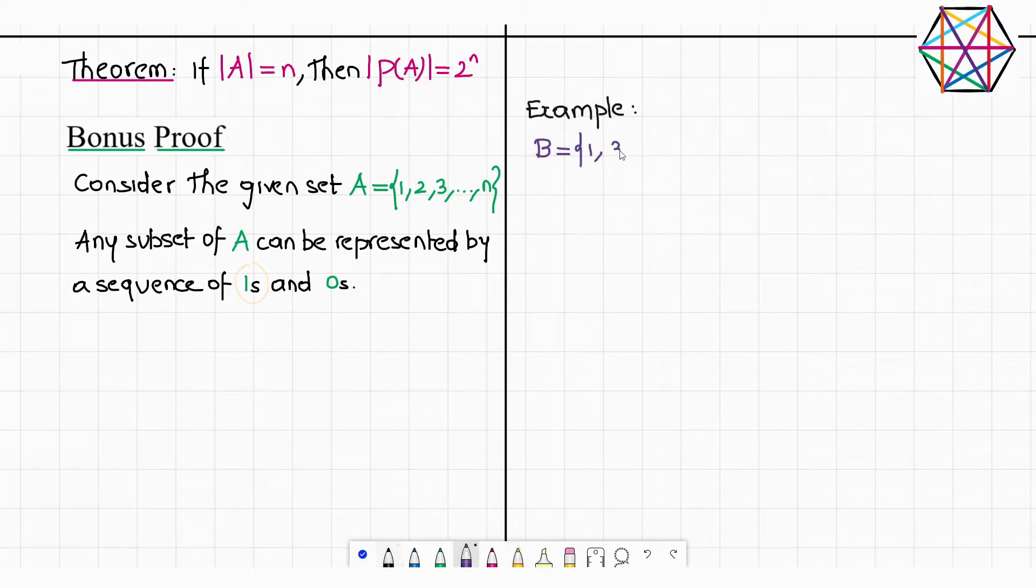For example, set B which is given by {1, 3, and 6} can be denoted by the sequence 1, 0, 1, 0, 0, 1, 0, 0, 0, so on. It's a sequence consisting of n terms. So how do we interpret this? Let us rewrite the set A with little more detail. In this sense, let me write more elements of it.